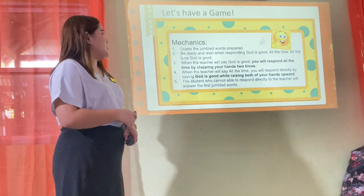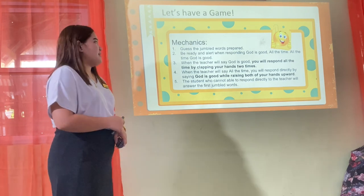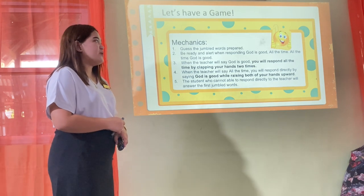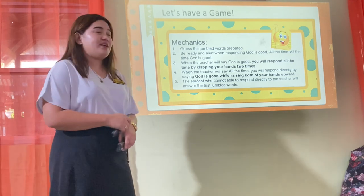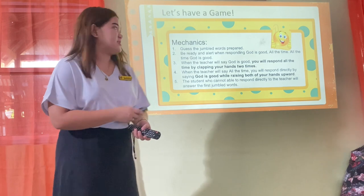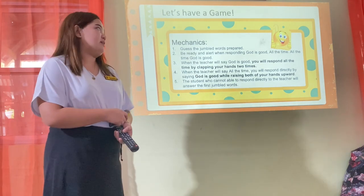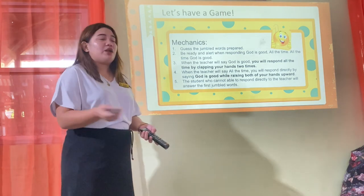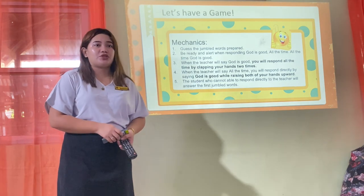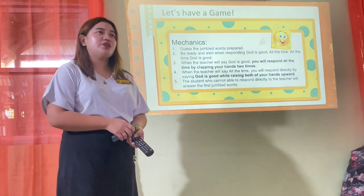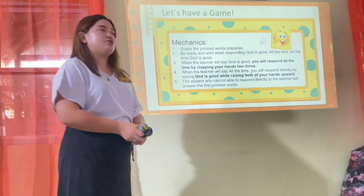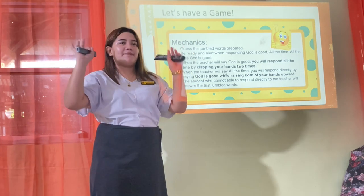Are you ready? Here are the mechanics. First, guess the jumbled words prepared. Second, be ready and alert when responding. When I say 'God is good,' you will respond 'all the time' by clapping your hands two times. And when I say 'all the time,' you will respond 'God is good' by raising both of your hands upward. Students who cannot respond directly to the teacher will answer the jumbled words. Is that clear?